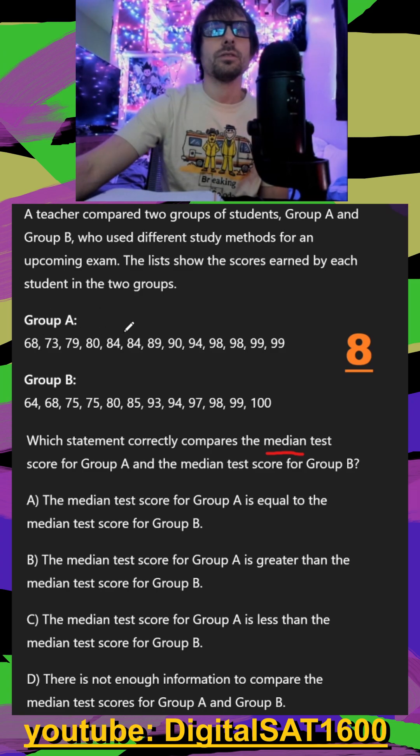Counting up, we have 13 in group A. So we can do our little median trick. This is even more helpful when there's more numbers than this. So that is, take your median when it's odd - that's your middle number.